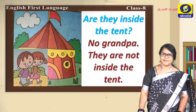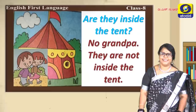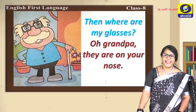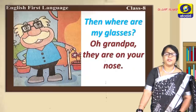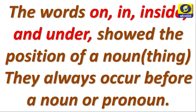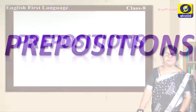Are they inside the tent? No, grandpa. They are not inside the tent. Where are grandpa's glasses? Yes, children, we found out where grandpa's glasses were. Now, what are these words? The words on, in, inside, and under showed the position of a noun or a thing. They always occur before a noun or pronoun and these we call prepositions.